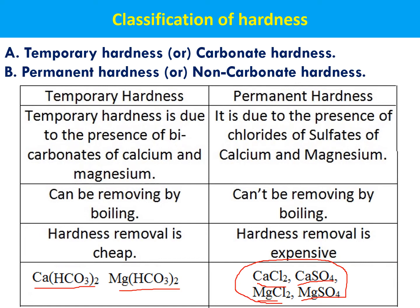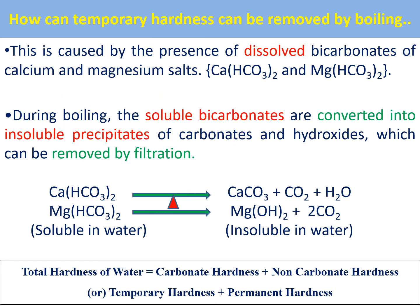If any one of those four salts is present in the water, that water has permanent hardness. If any one of the two bicarbonate salts is present, that water has temporary hardness. If water contains both temporary hardness-causing salts and permanent hardness-causing salts, that is called total hardness — or simply hard water.